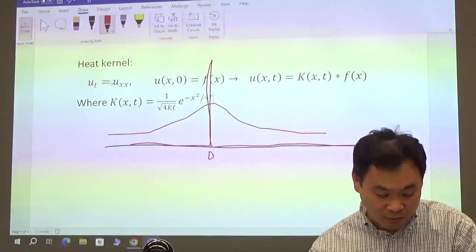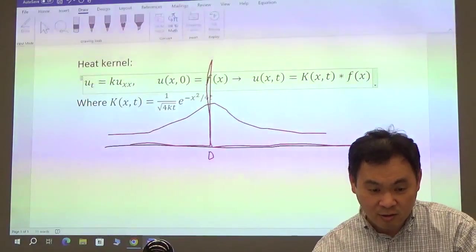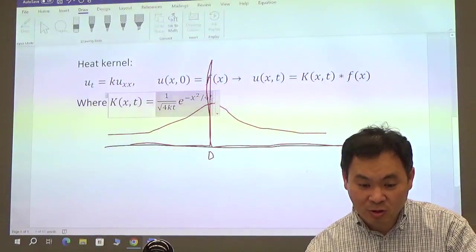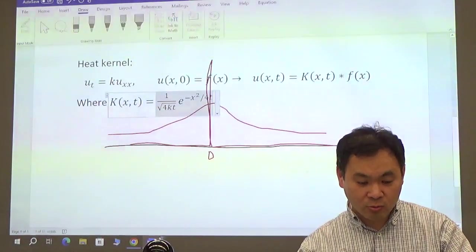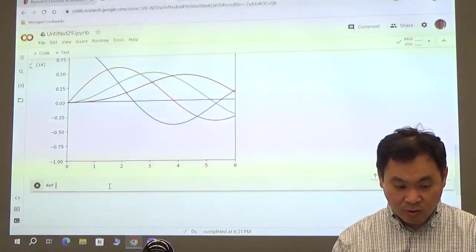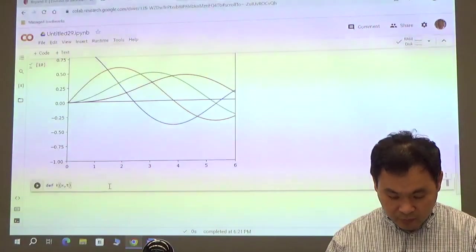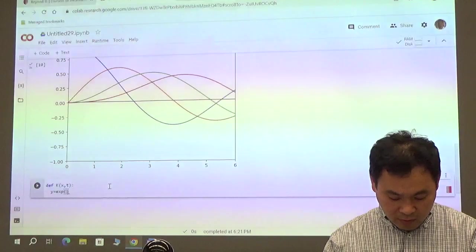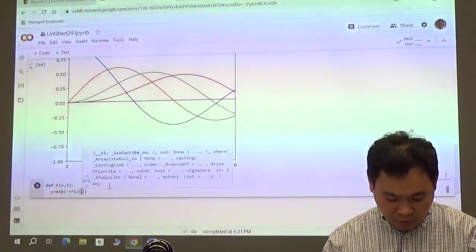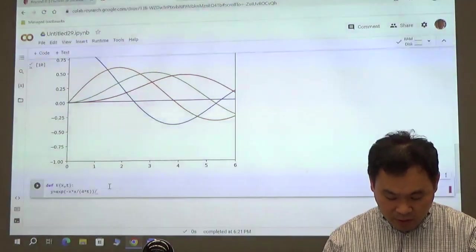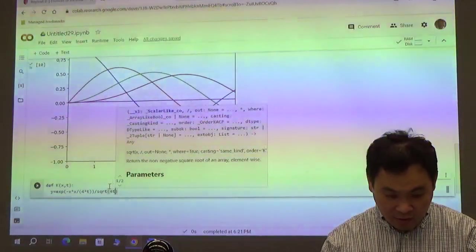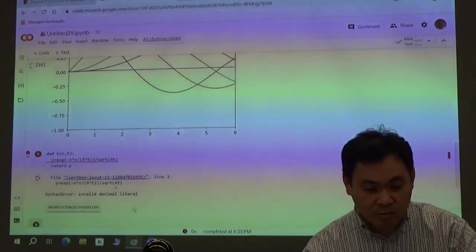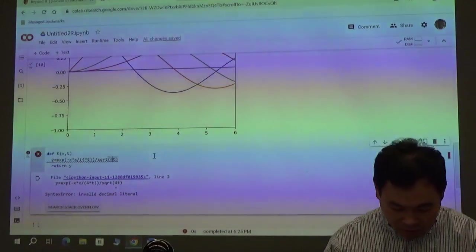Oh, I forgot to put k here. So if you have k here, that k is in here. Just for simplicity, let's just set k as one. So let's just draw this picture for k equals one. So let's do that. Let's define the function first. So define K(x,t). What was it? y equals exponential of negative x times x divided by 4 times t. And then you have to divide it by square root of 4 times k times t. That will return y. Sorry, I should have put 4 times t. They don't like 4t.